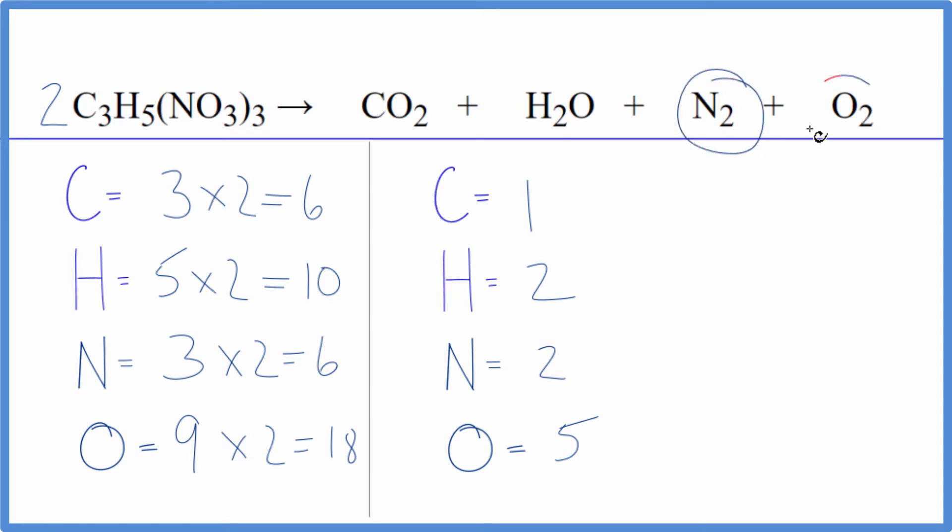We have nitrogen and oxygen by themselves over here so we want to leave those to last because they're easy to fix. We can change the coefficient here or here and that won't change any of the carbons or hydrogens, so we leave these to the last.